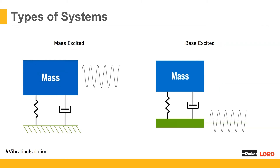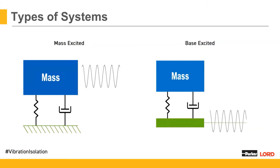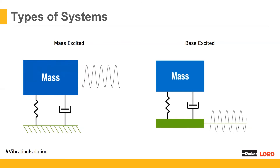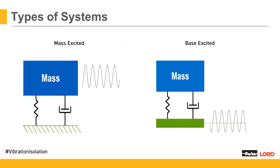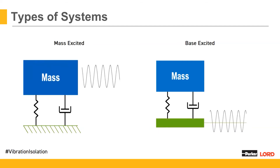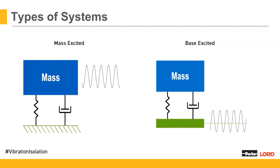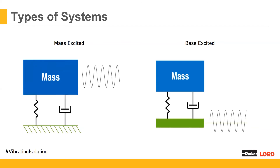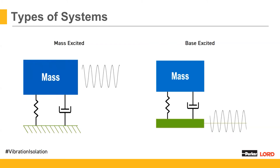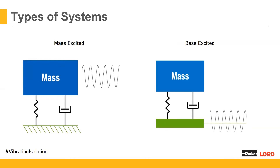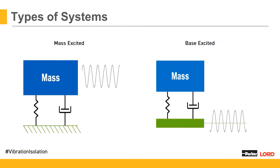We have the three basic parts of a system — a mass, a spring, and a damper — and for our elastomeric mounts, the spring and damper are often contained in the same elastomeric mount. There are two types of systems we can analyze: the first is a mass excited system, where the engine is the mass producing vibration and we're isolating it from the vehicle frame. The second is a base excited system — think of a cab where you're trying to isolate inputs from the engine, road, and terrain from getting into the cab.